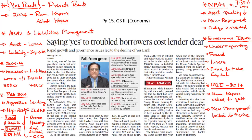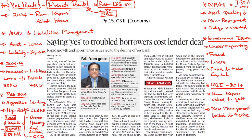Yes Bank is a private Indian bank and it is one of the major private banks to be established in the post-LPG era. After India liberalized its economy, the RBI started giving out licenses for private banks. One such private banking license was obtained by Rana Kapoor and Ashok Kapoor from RBI and they established Yes Bank in 2004.